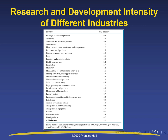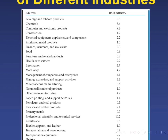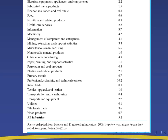R&D Intensity of Different Industries. The first on the list is Beverage and Tobacco Products with an R&D intensity of 0.5. Second is Chemicals at 5.6. Third is Computer and Electronic Products at 9.3. Fourth is Construction at 1.2. Fifth is Electrical Equipment, Appliances and Components at 2.2. For more information, please visit the link below.